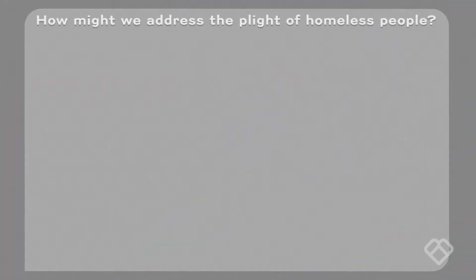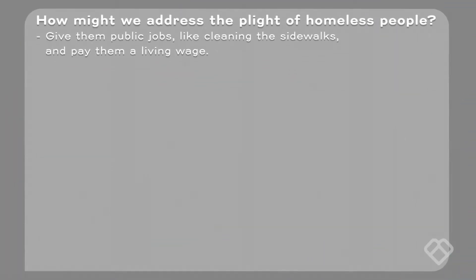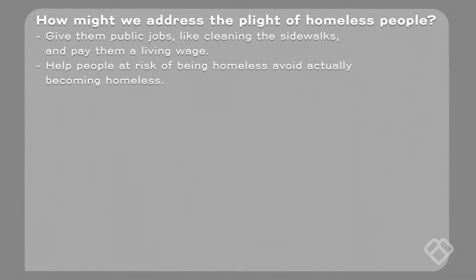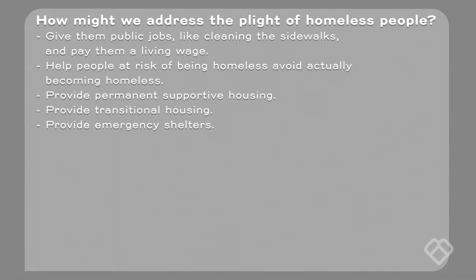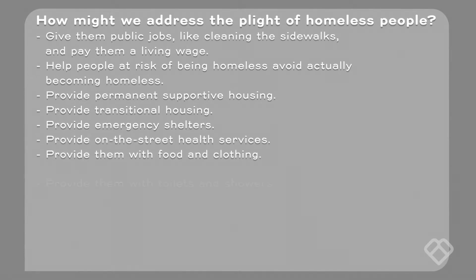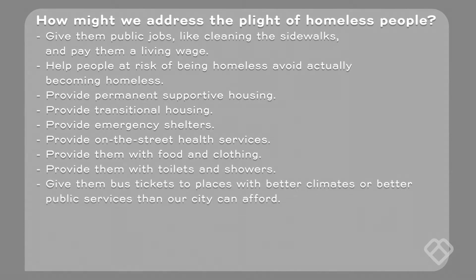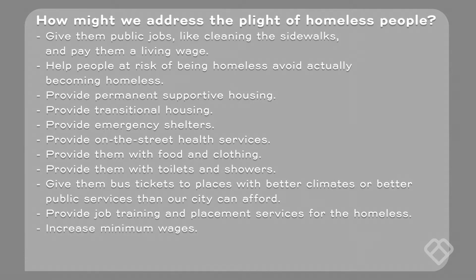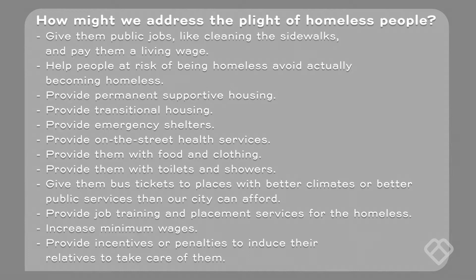Let's focus first on a set of 'how might we's focused on the plight of the homeless people themselves. Here are some ideas that might come up in a brainstorming session: give them public jobs like cleaning the sidewalks and pay them a living wage; help people at risk of being homeless avoid actually becoming homeless; provide permanent supportive housing; provide transitional housing; provide emergency shelters; provide on-the-street health services; provide them with food, clothing, toilets and showers; give them bus tickets to places with better climates or better public services; provide job training and placement services; increase minimum wages; or provide incentives or penalties to induce their relatives to take care of them.